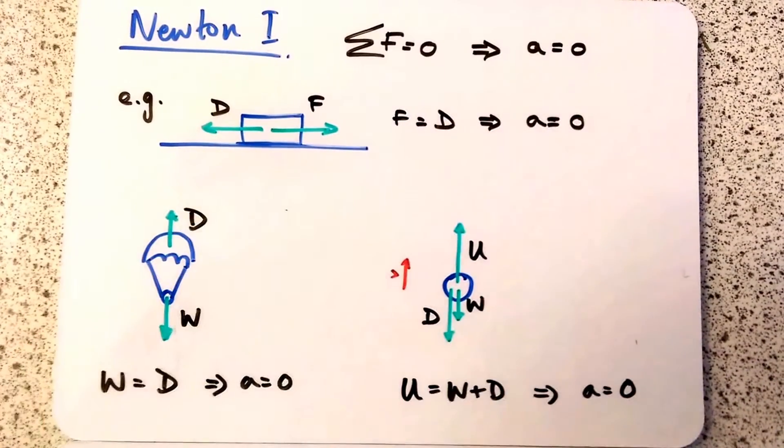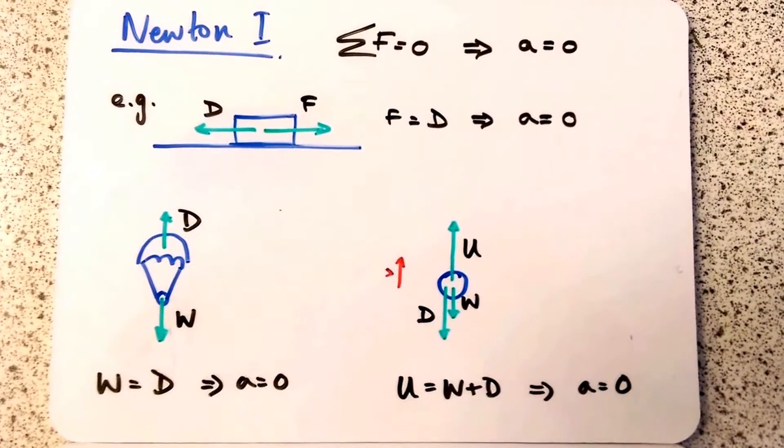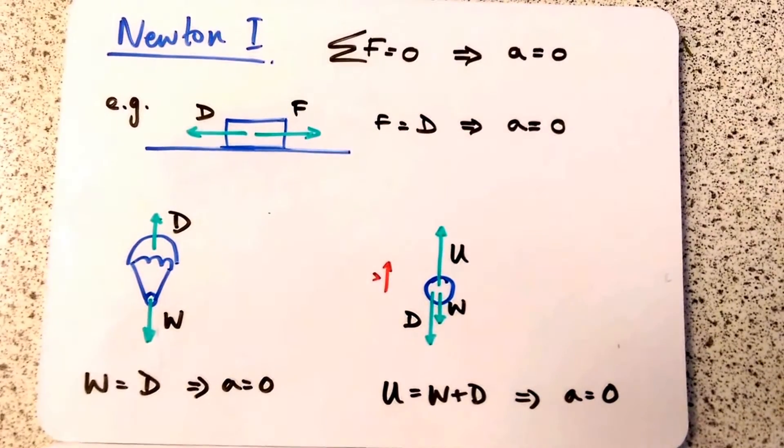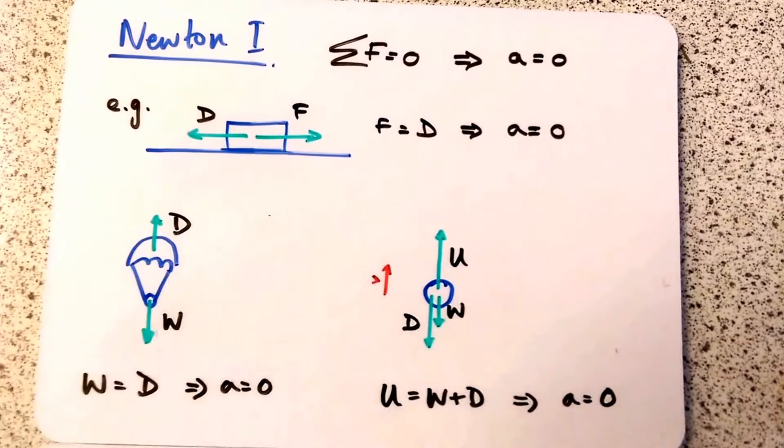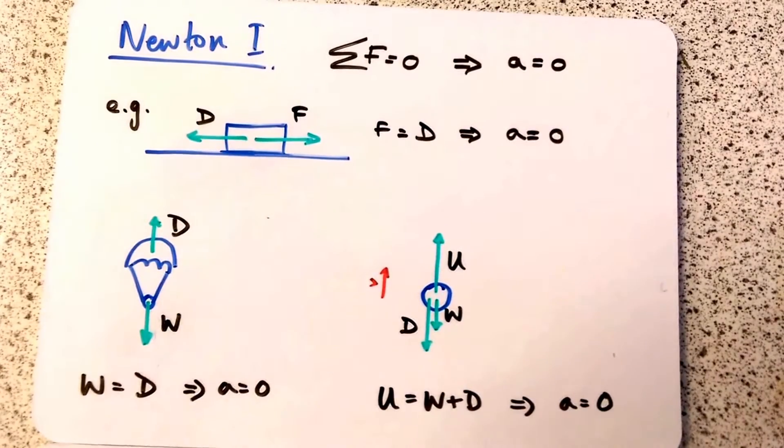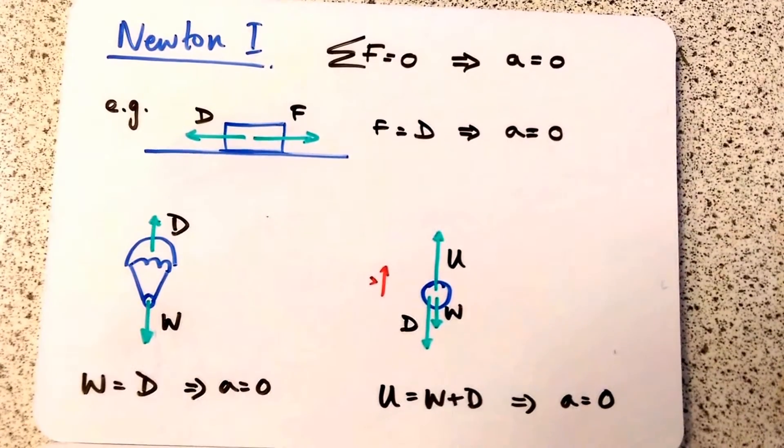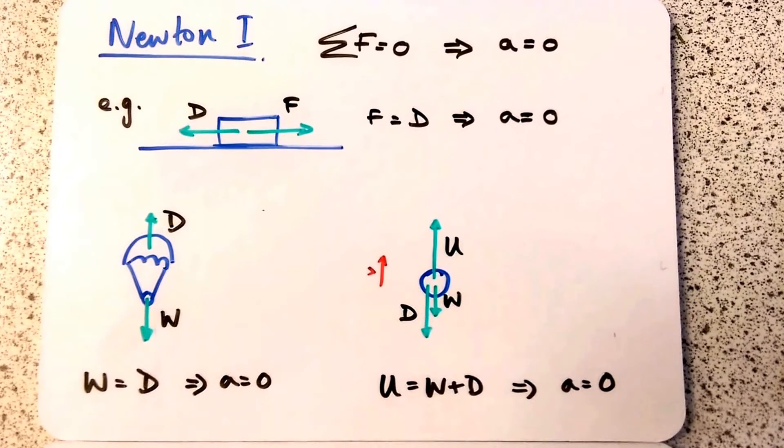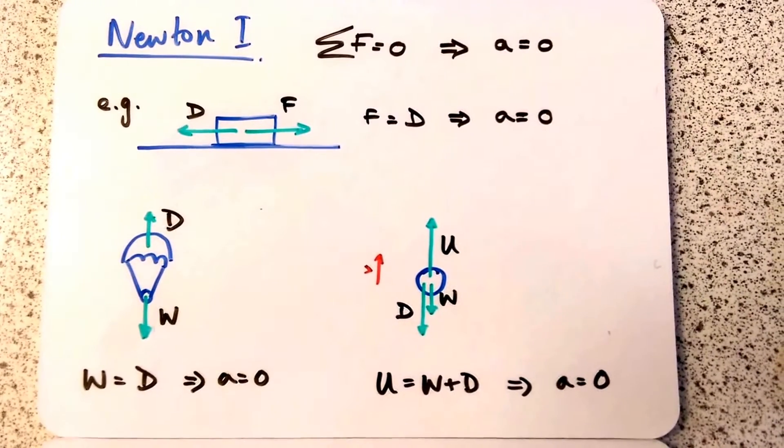Some examples - let's say this is a car. The thrust forwards equals the drag, so it's going at constant speed. That's a parachute. If its weight equals the viscous drag as it moves down through the air, W equals D, then there's no acceleration. It's going at constant speed. And lastly, here's one they like to apply this to.